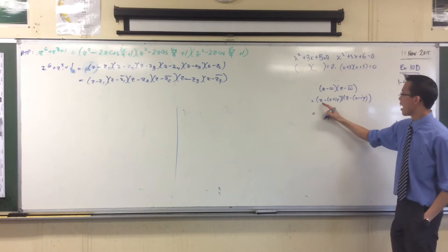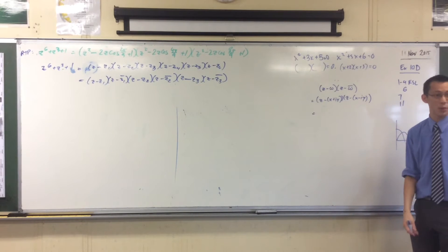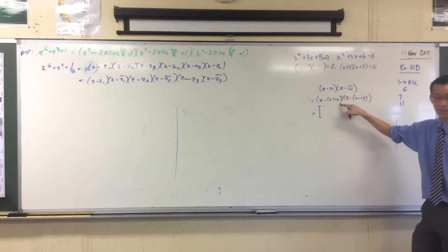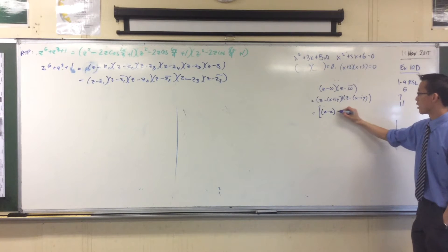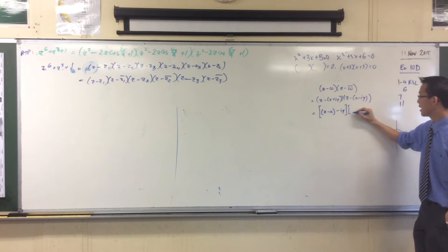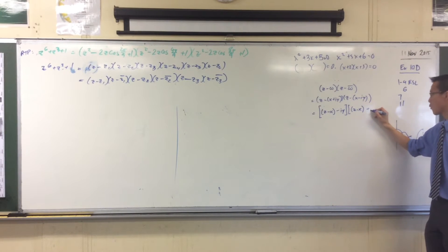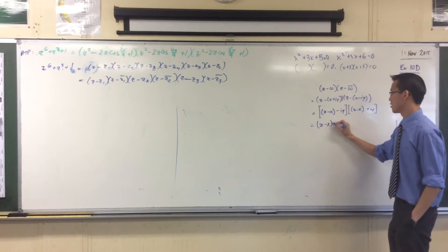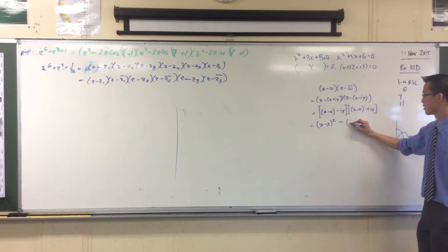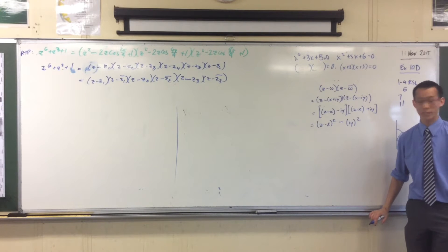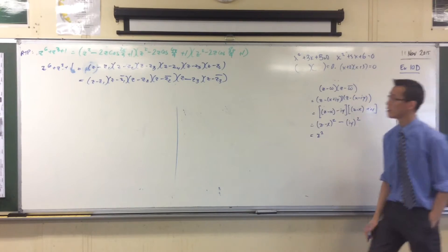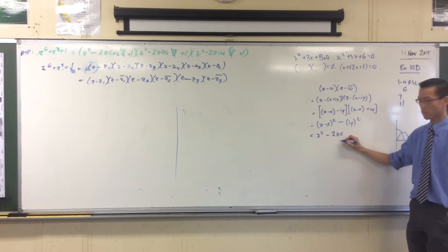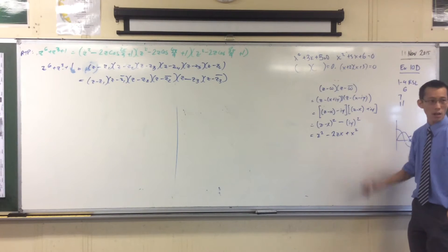I see that this thing with the brackets in different spots is actually a difference of squares — can you see it? I've got the plus and then the minus, so there must be a difference of squares. I'm going to pair up z and x: instead of x + iy, I've got (z − x) − iy, and here I've got (z − x) + iy. Difference of squares: (a − b)(a + b) = a² − b².